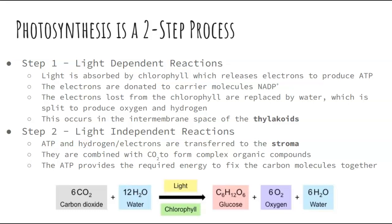In step one, you absorb light by the chlorophyll, which is a pigment in the chloroplast. It releases electrons and produces ATP — energy. The electrons are donated to carrier molecules, NAD+ and NADP+, and then the electrons lost from the chlorophyll are replaced by water, which is split to produce oxygen and hydrogen. This happens in the thylakoids. The light-independent reactions happen in the stroma. ATP and hydrogen/electrons are transferred to the stroma, combined with carbon dioxide to form organic compounds.